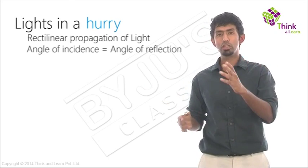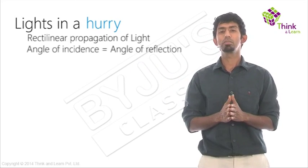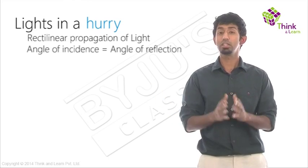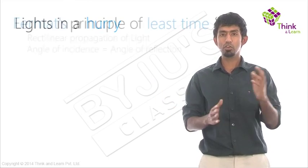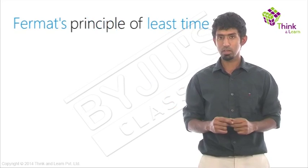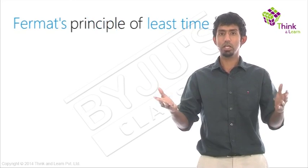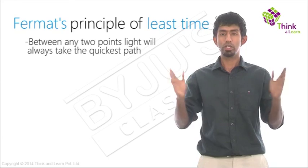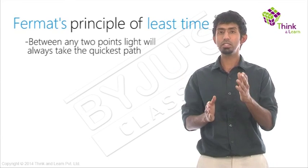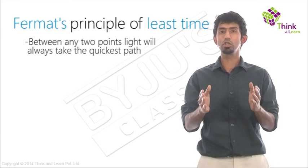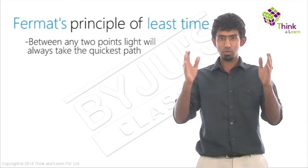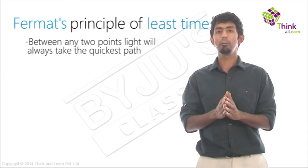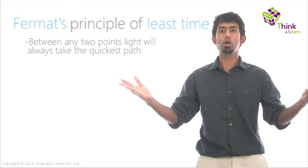Light wants to take the quickest path between any two points. We've stated this in a funny manner as 'light's in a hurry,' but there is a name for this: it is called Fermat's Principle of Least Time. Fermat stated that between two points, light will always take the quickest path. And that is going to be our focus, because with that one statement, we are going to prove everything in this entire chapter called Ray Optics.